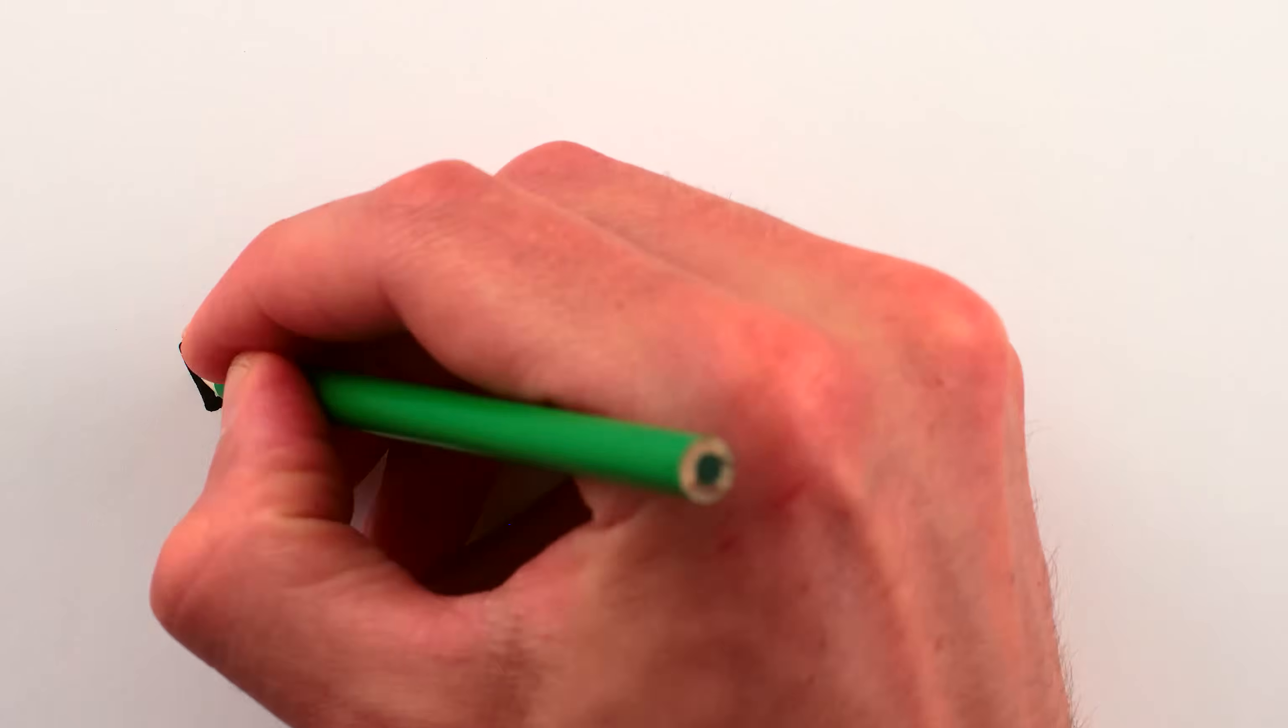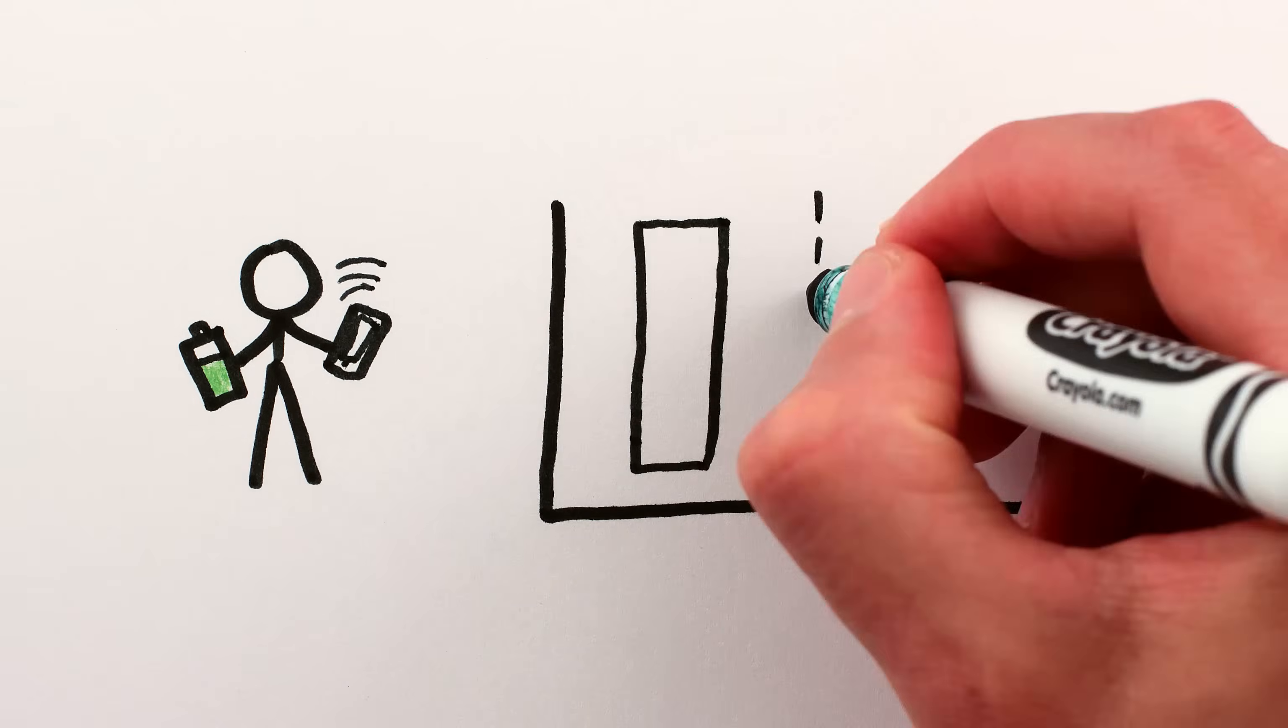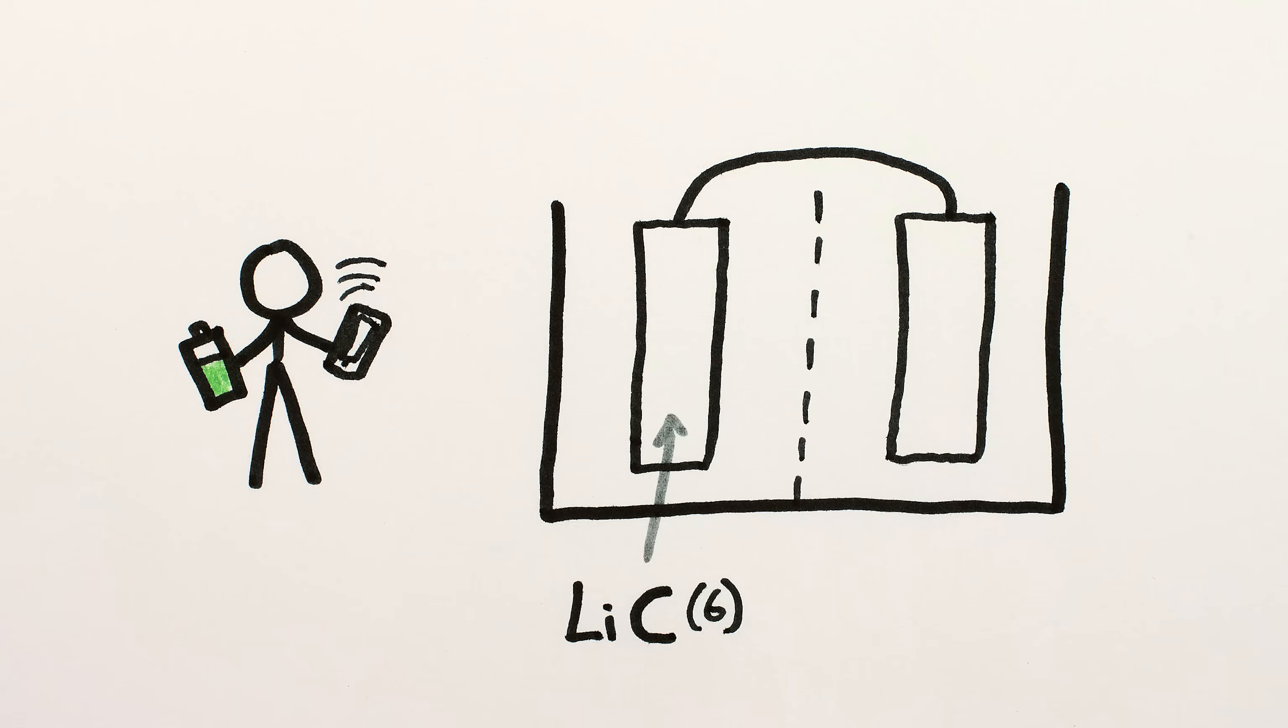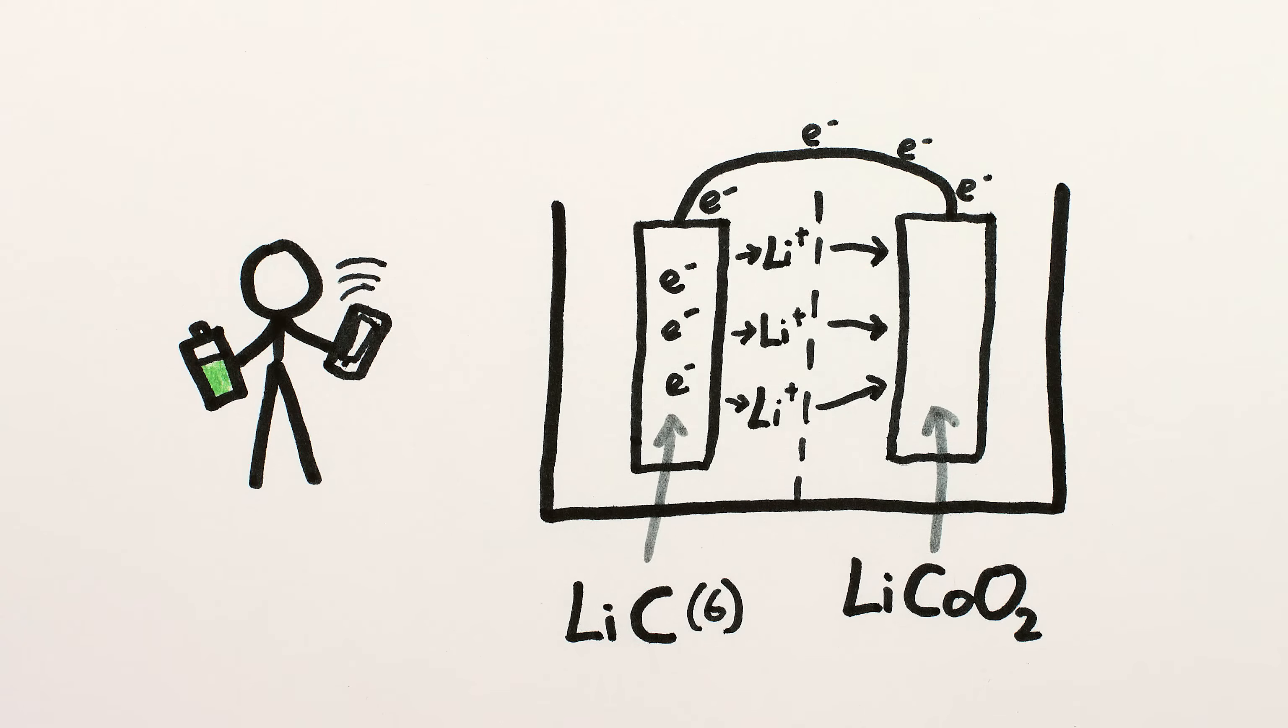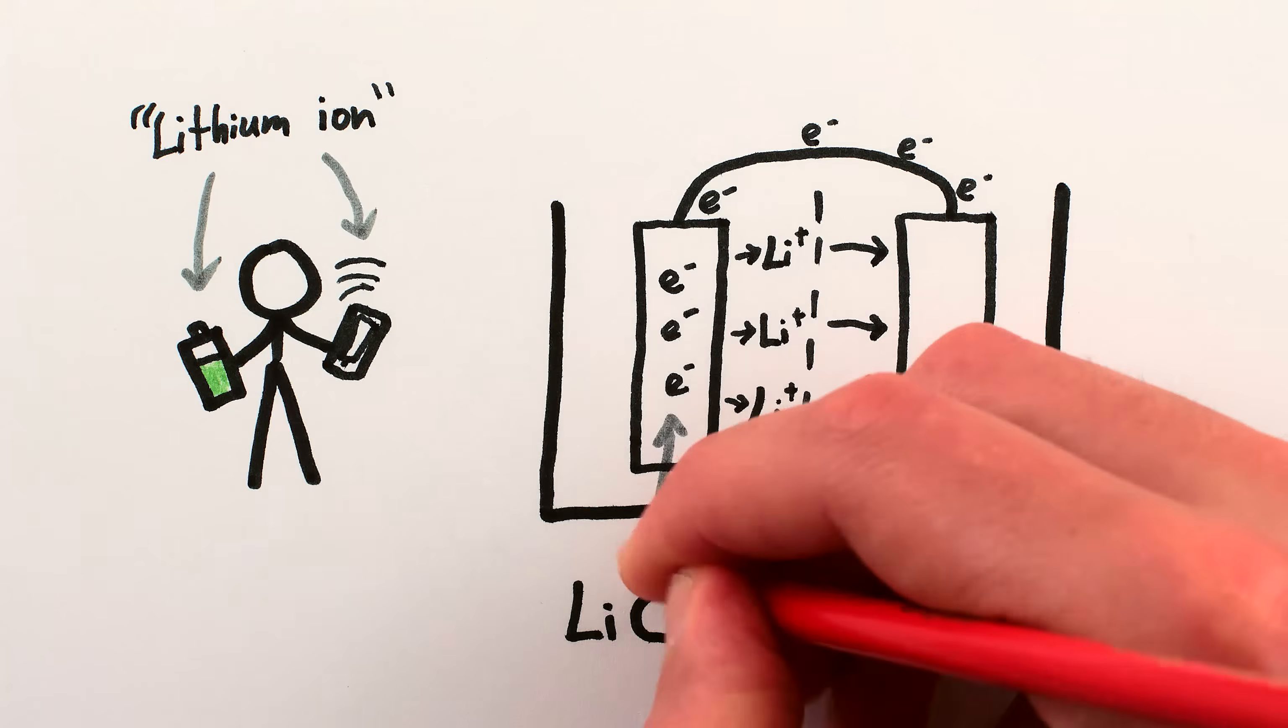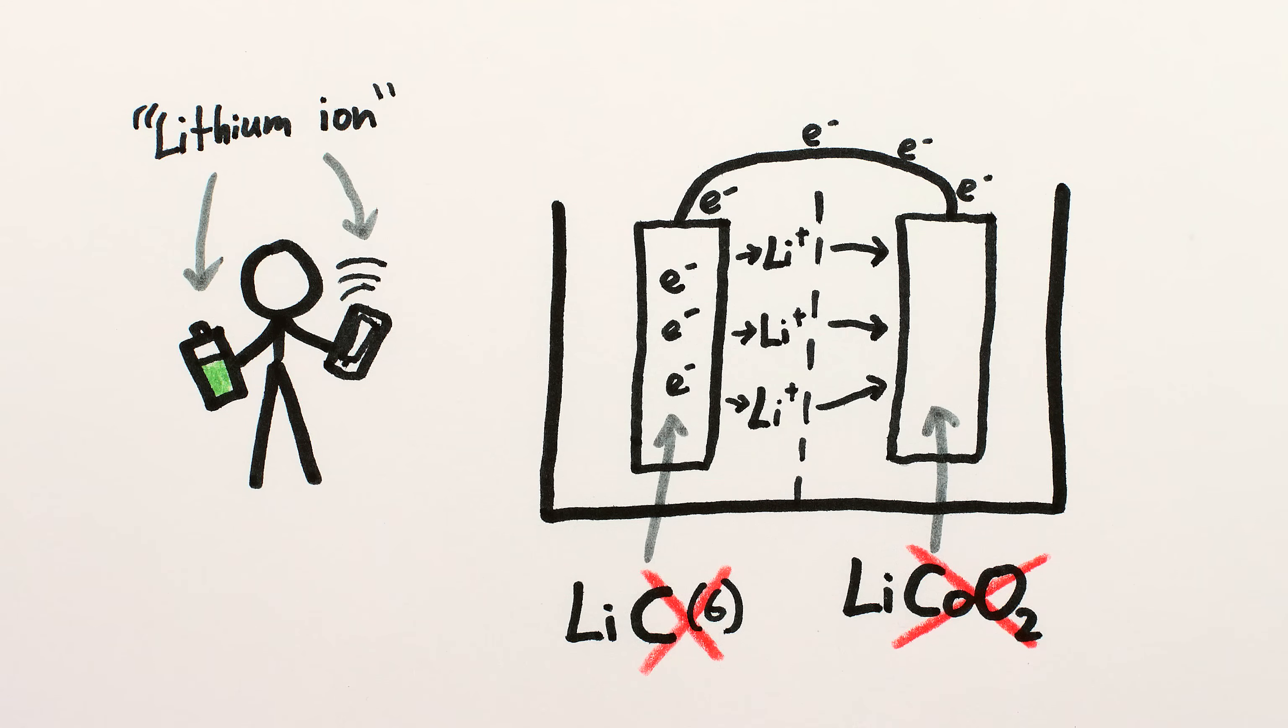The current standard for lightweight, rechargeable, and commercially safe batteries uses lithium and graphite on one side, with a variety of options for the other side – often lithium cobalt oxide. Lithium atoms are what either dissolve or deposit in order to transfer electrons – hence the name lithium-ion – while the other materials are dead weight along for the ride. I mean, they play important chemical roles, but they greatly increase the weight per electron transferred.